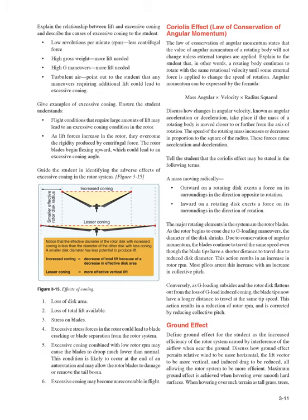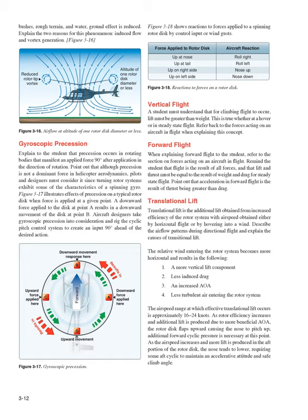Ground effect: define ground effect for the student as the increased efficiency of the rotor system caused by interference of the airflow when near the ground. Ground effect permits relative wind to be more horizontal, the lift vector to be more vertical, and induced drag to be reduced — all allowing the rotor system to be more efficient. Maximum ground effect is achieved when hovering over smooth, hard surfaces. When hovering over tall grass, trees, bushes, rough terrain, and water, ground effect is reduced. The two reasons for this phenomenon are induced flow and vortex generation.